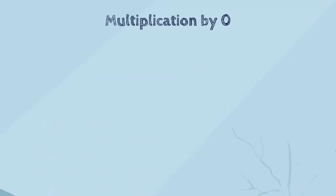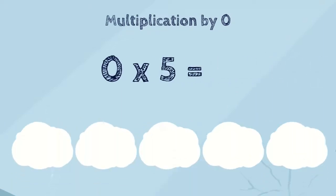And what if we multiply zero by five? It's still nothing! Yes! No matter how many times we add nothing, the answer is always nothing! So, if zero is multiplied by any number, the answer is always zero.